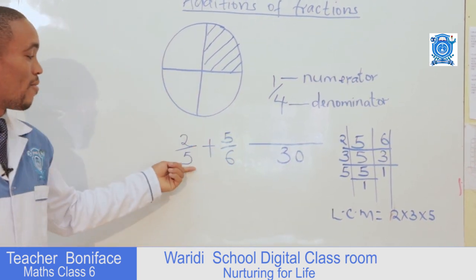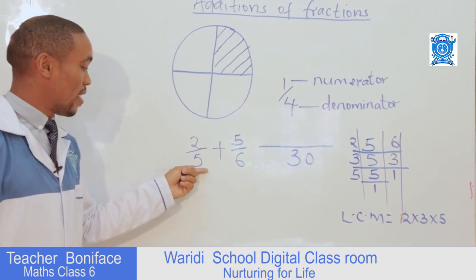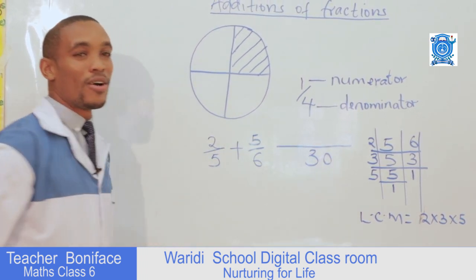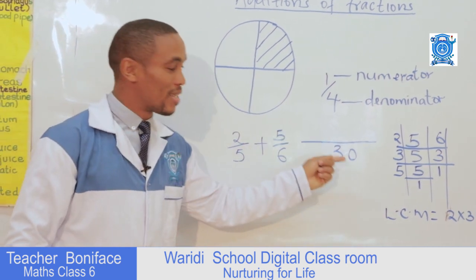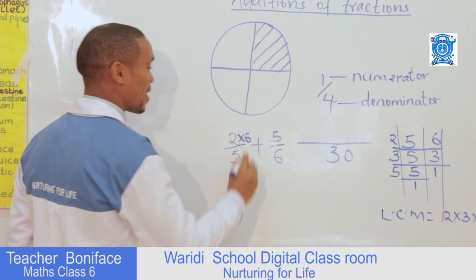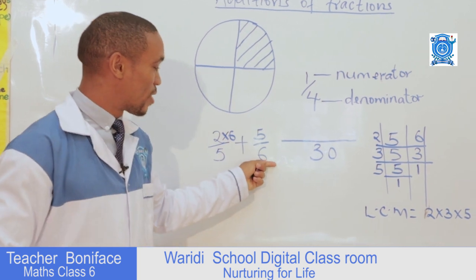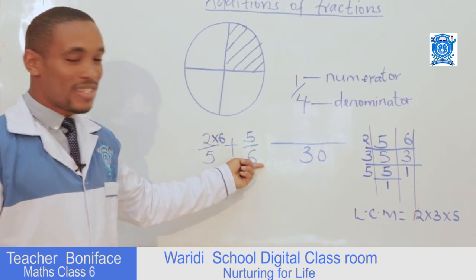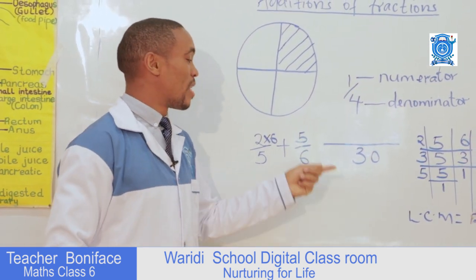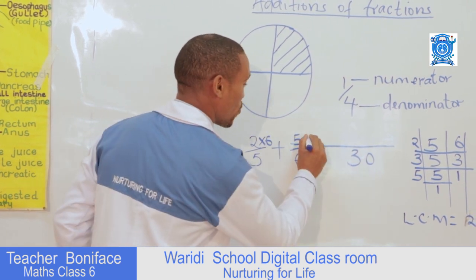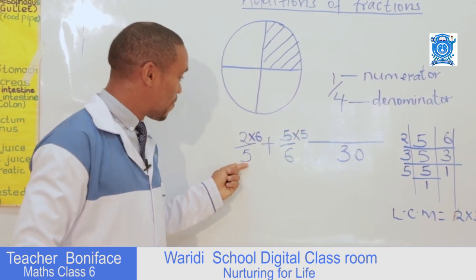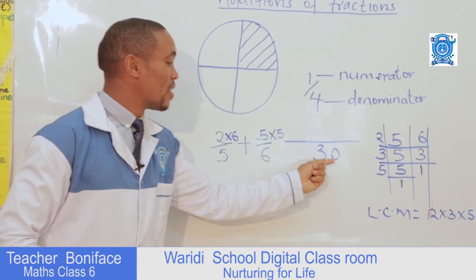Then we get back to our calculation. We take our first denominator, which is five, and ask ourselves how many times does five go into thirty — that is six. You multiply the numerator by six. Then how many times does six go into thirty? That is five — six times five is thirty. So you get that number multiplied by the numerator. Five times six is thirty, and six times five is thirty.